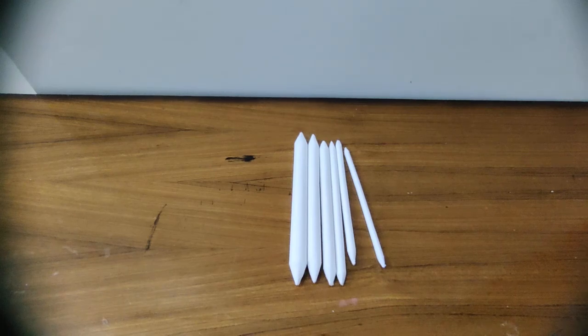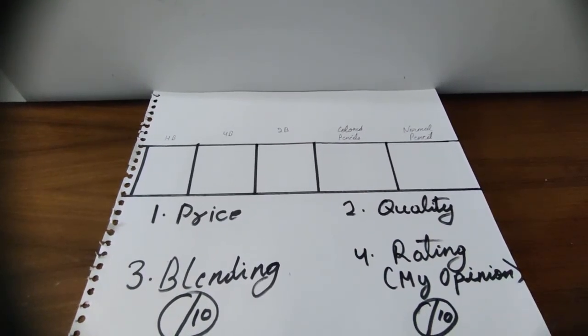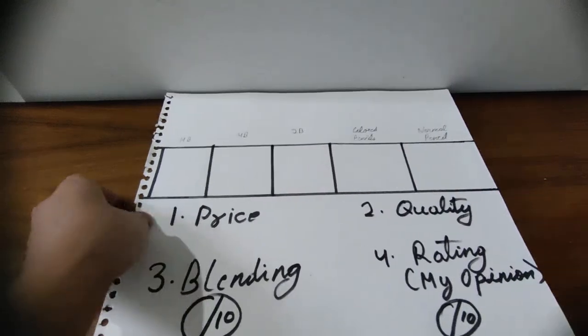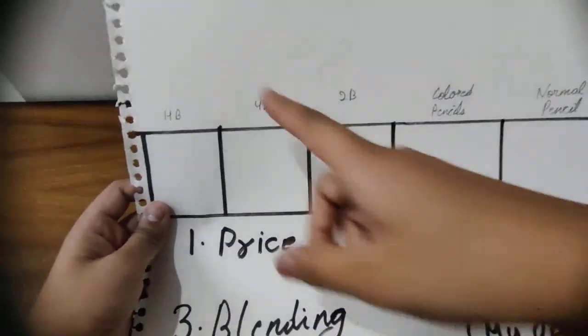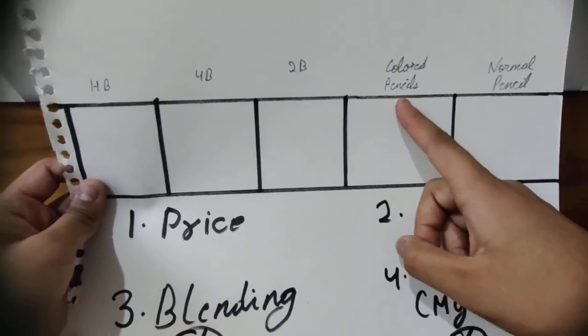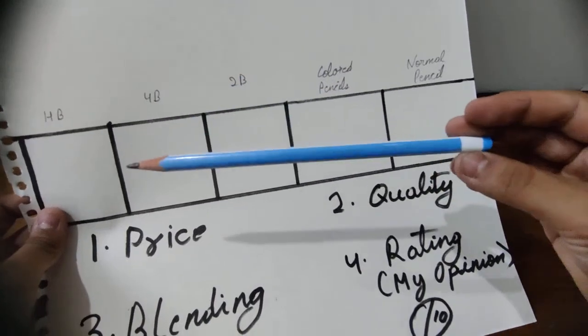So I have this little table made in which I will be testing with the pencils: HB, 4B, 2B, and colored pencil, and a normal pencil which looks like this, which everyone has.